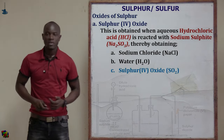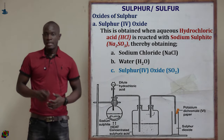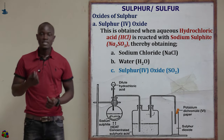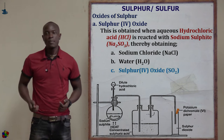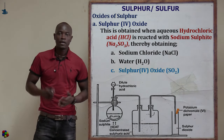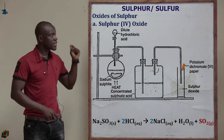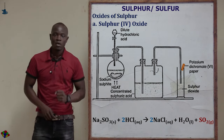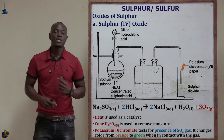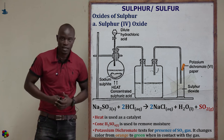Let's begin with sulfur(IV) oxide. Sulfur(IV) oxide is obtained by reacting dilute hydrochloric acid with sodium sulfite in a round bottom flask. Heat is used in this process in order to speed up the rate of reaction, so heat will act as a catalyst.